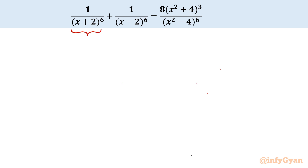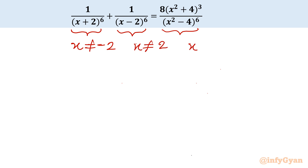Straight away, the denominator cannot be 0. From the first term, x cannot equal −2. From the second term, x cannot equal +2. From the RHS denominator, x cannot equal ±2. So the overall conclusion is x cannot equal ±2.